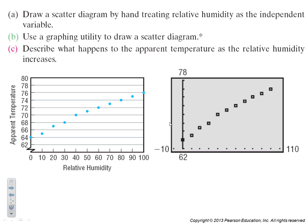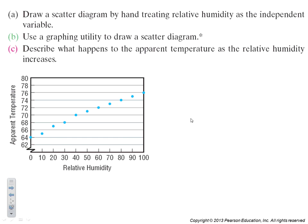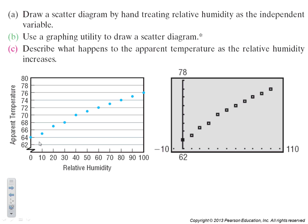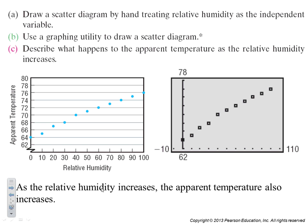In the graphing calculator it looks somewhat like this. You have to adjust your scale so that x scale is from 0 to 100 counting by tens and y scale is from 62 to 78 and here we count by twos. As the relative humidity increases, the temperature also increases.